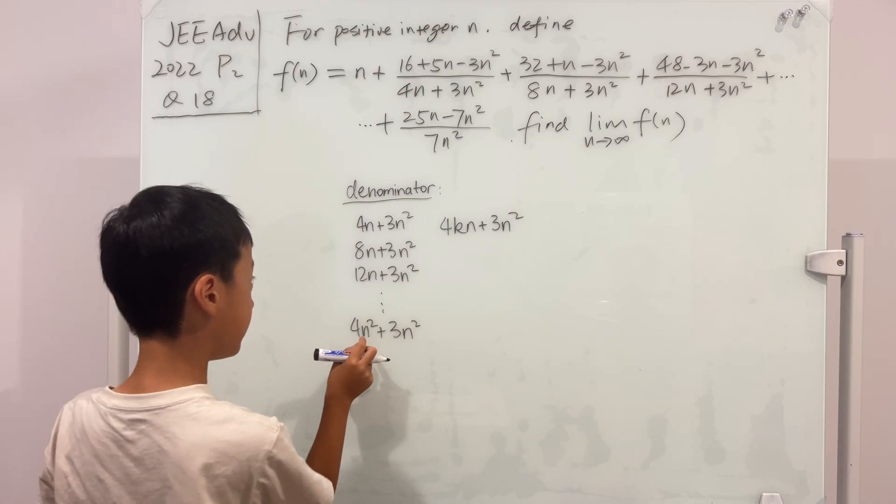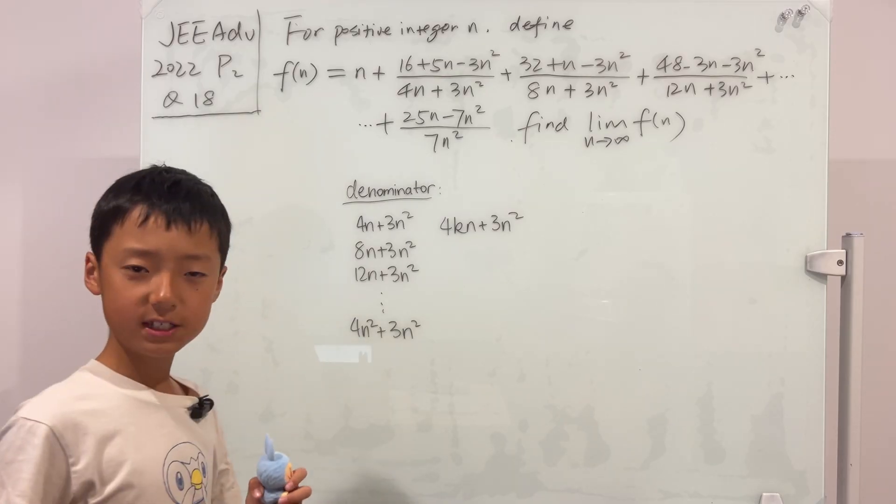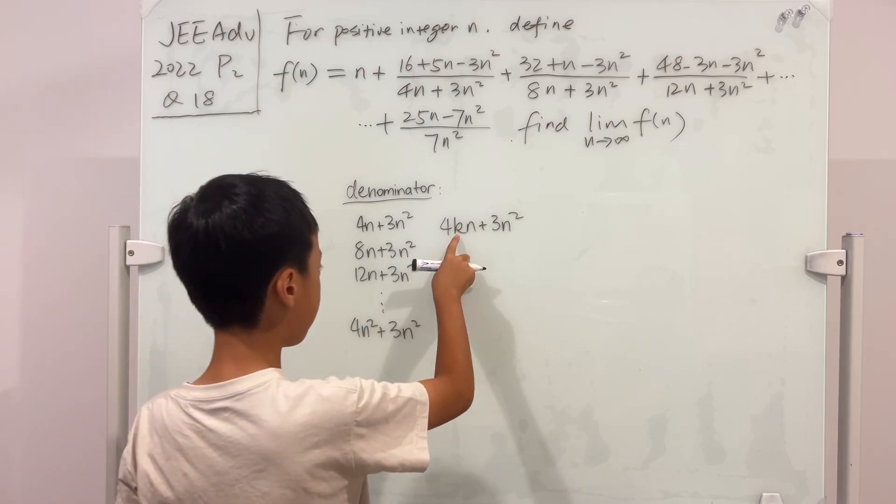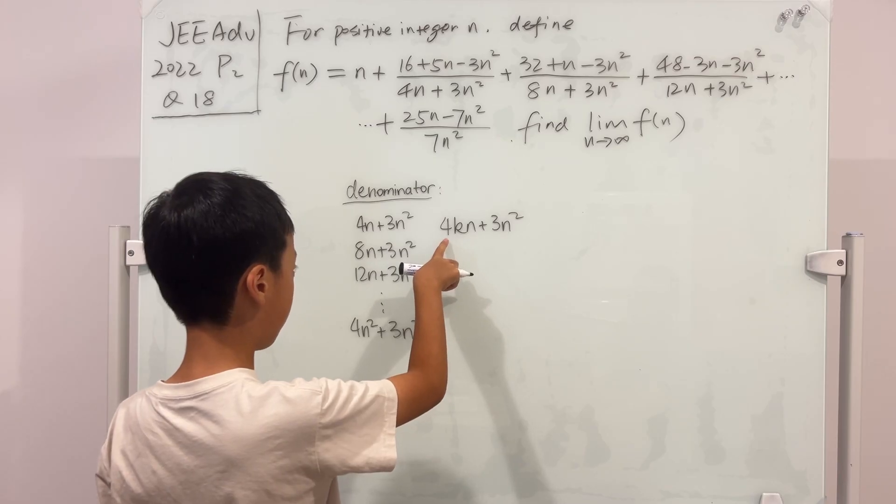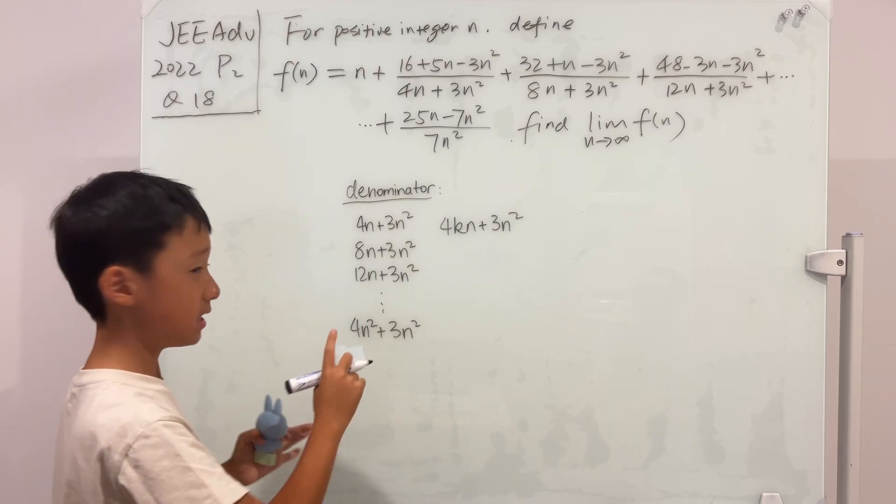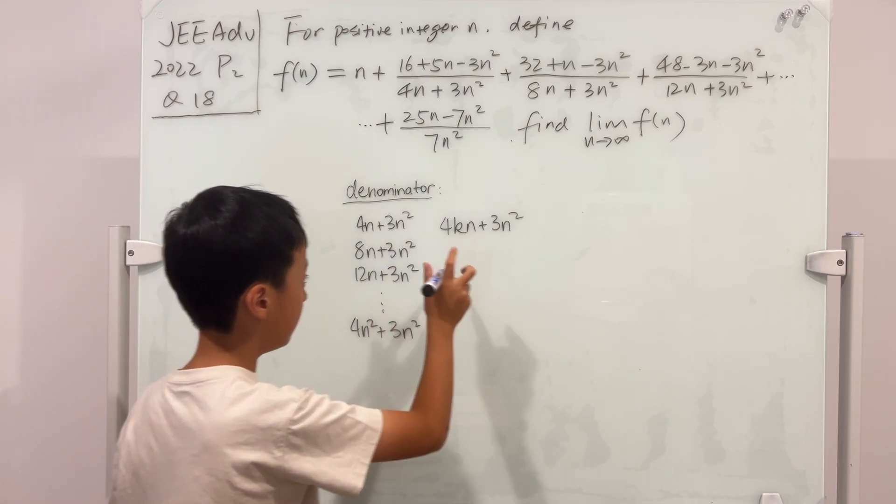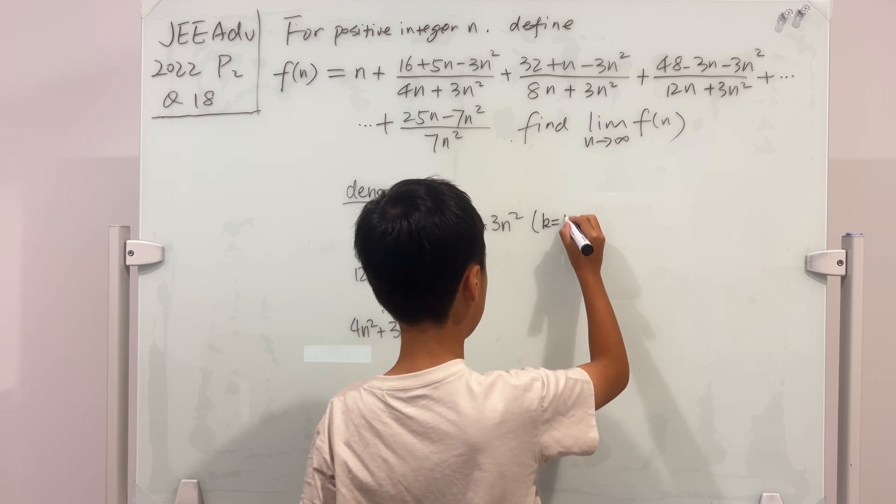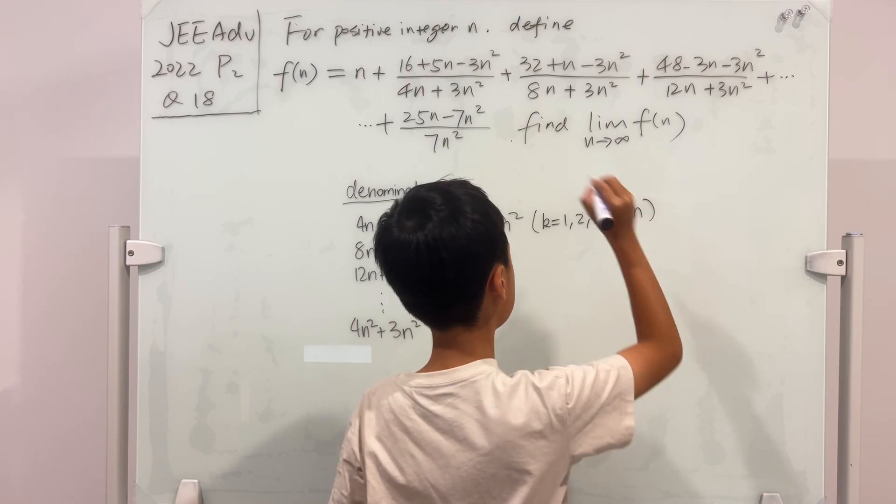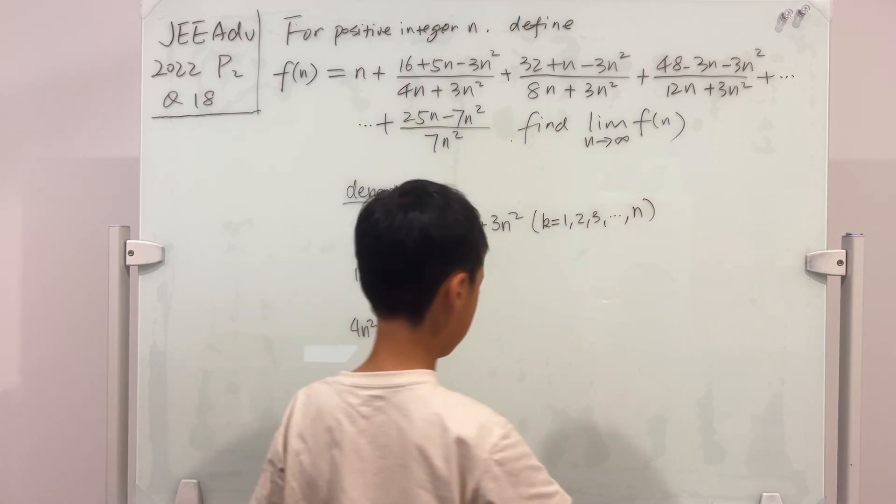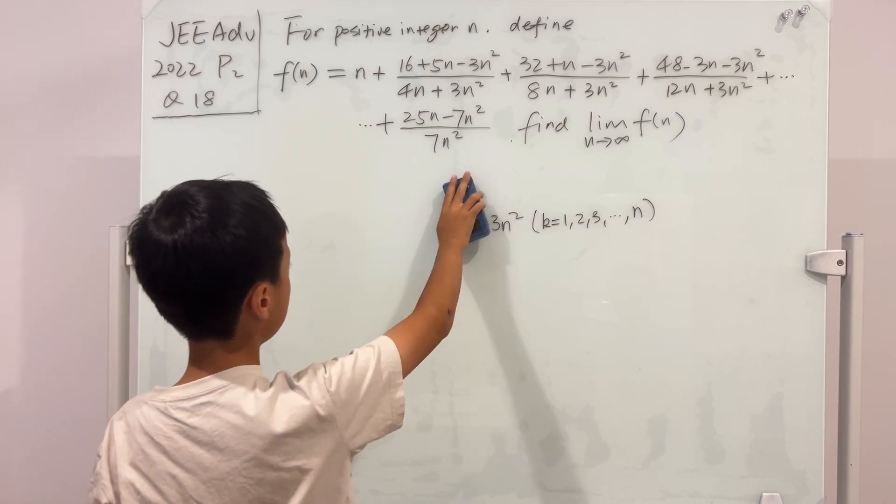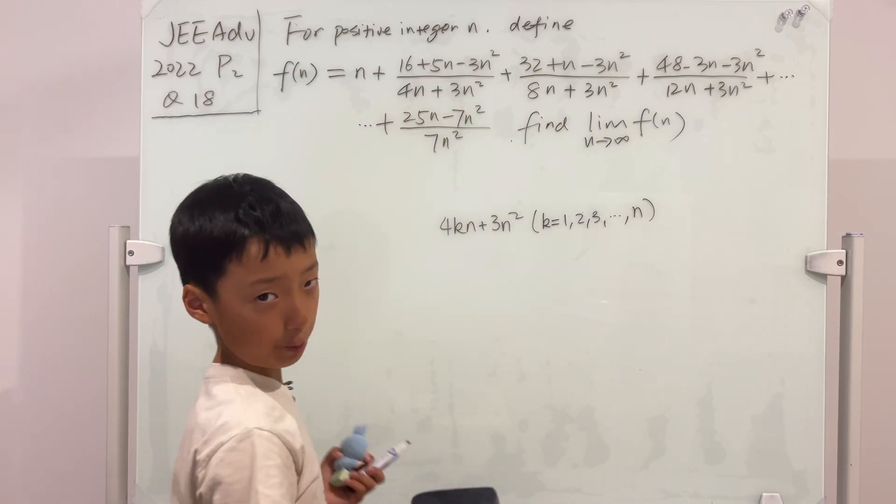But if we add this in, look, it's still the same. Because if k goes from 1 to n, then if k is equal to n, then it becomes 4n². Nice. So the denominator pattern should be this, and I'm going to write a bracket, k equals 1 all the way to n. So I'm just going to rub all of this out and when I rewrite this pattern, I won't write this part, I just hope that you can remember this.